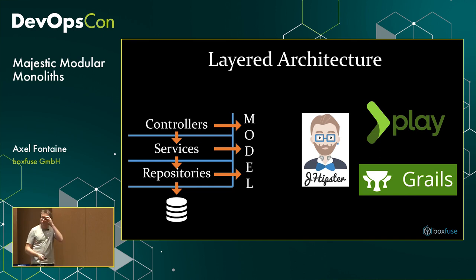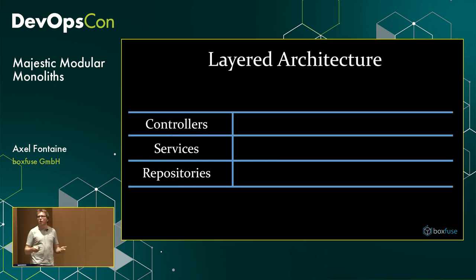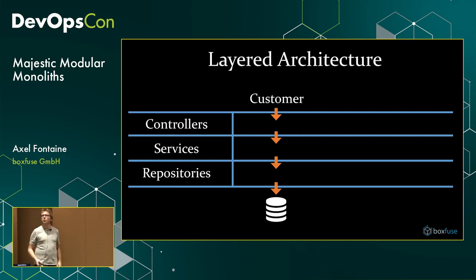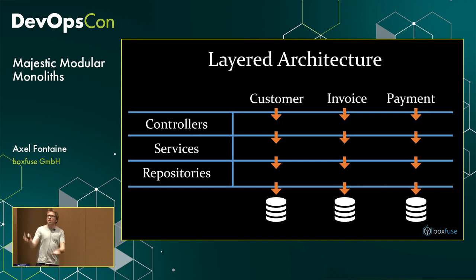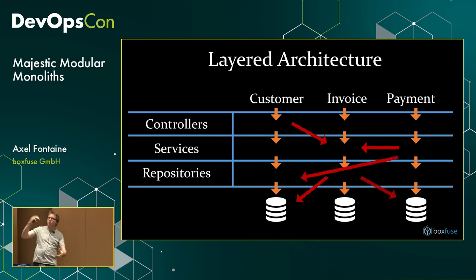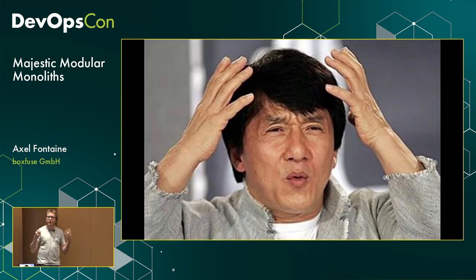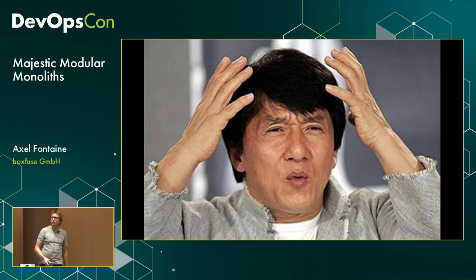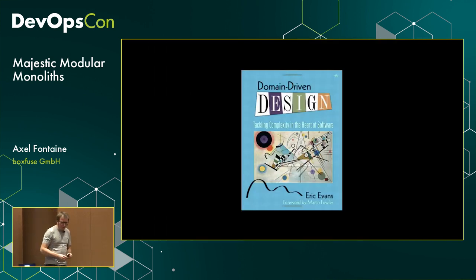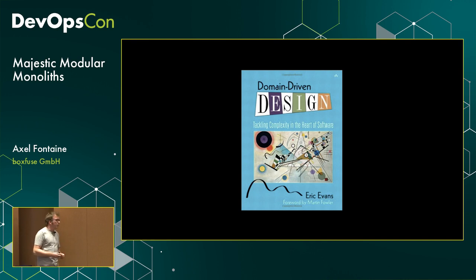As applications grow, they'll have different areas of responsibility — for example, one area for customers, one for invoices, one for payments. In theory it would look clean, but messy requirements introduce dependencies left and right and that's where complexity creeps in — it becomes difficult to understand: if I turn this knob, will it break over there? The literature has good answers for managing this kind of complexity over time.